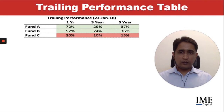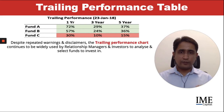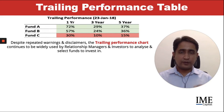A key law of wealth management is focusing on the wrong set of factors in fund selection. It starts with an overwhelming focus on the trailing performance table. Despite repeated warnings and disclaimers, this trailing performance table continues to be widely relied on by relationship managers and investors while making investment decisions.